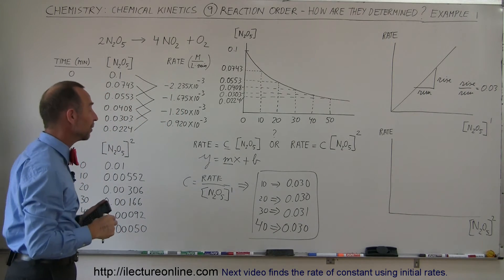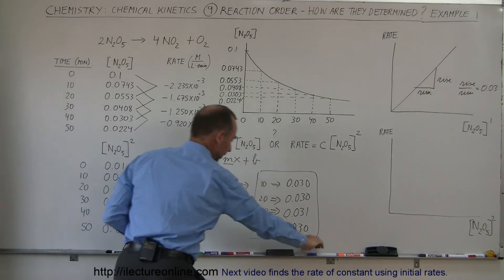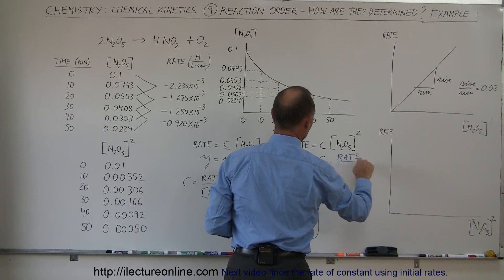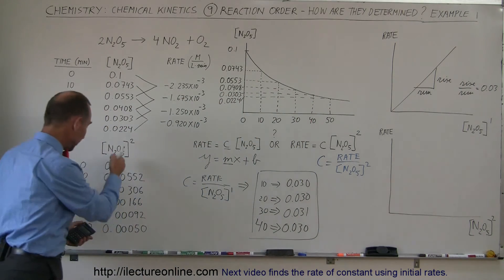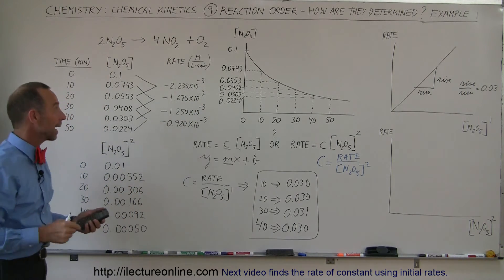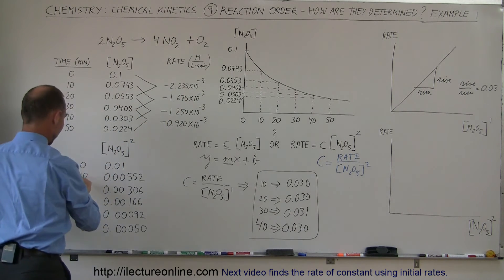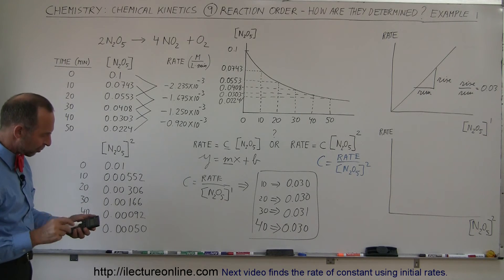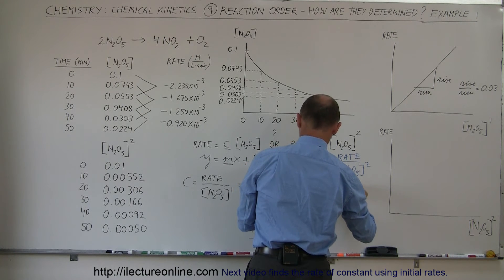Just to see how this works, let's assume second order. Now C equals the rate divided by the concentration of dinitrogen pentoxide to the second power. After 10 minutes: 2.235 × 10⁻³ divided by 0.00552 equals 0.405.